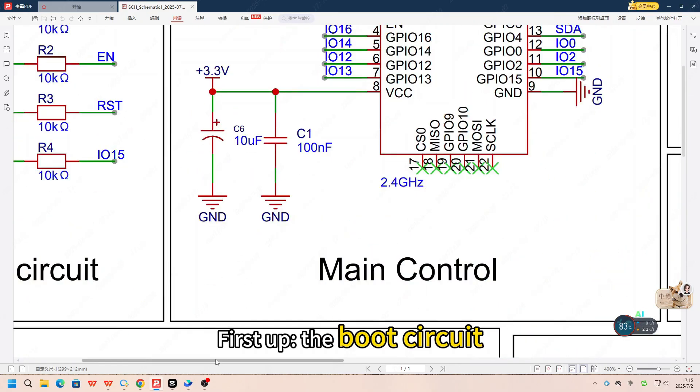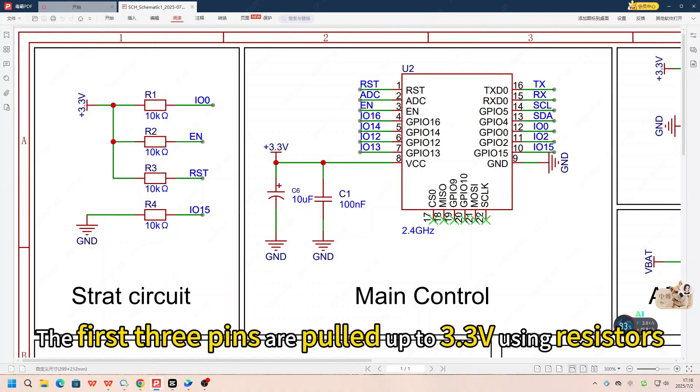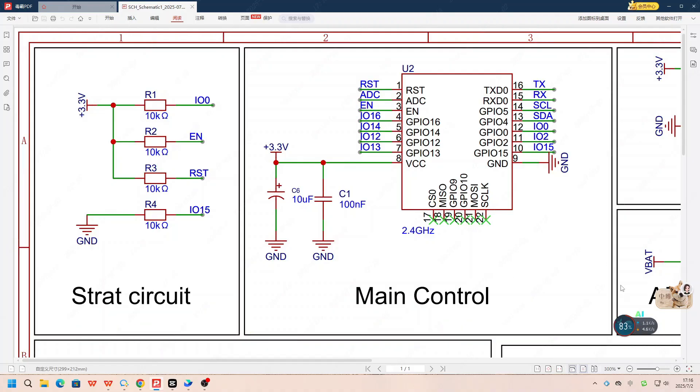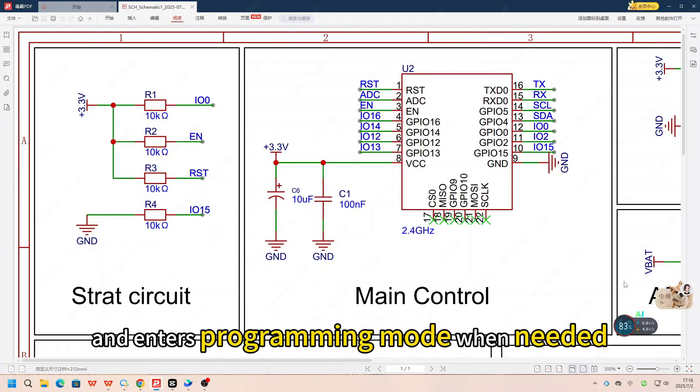First up is the boot circuit. This part connects to GPIO0, EN, RST, and GPIO15. The first three pins are pulled up to 3.3V using resistors. GPIO15 is pulled down to GND. This setup ensures the ESP8266 boots properly and enters programming mode when needed.